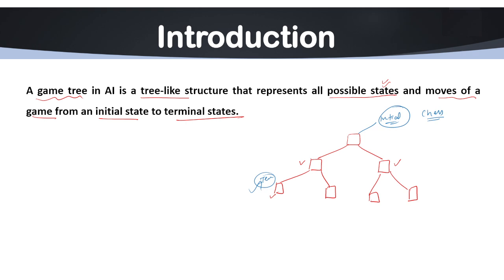Game tree is a conceptual representation of all the possible moves in a game, starting from the initial position and branching out to show subsequent moves by all the players. Some components of a game tree include the root node — the topmost node, which is the initial state of the game. Another component is branches, which we can also call edges. The connection between two states is called an edge or branch, and it represents possible moves from one state to another. From a particular state, we can have two possible options.